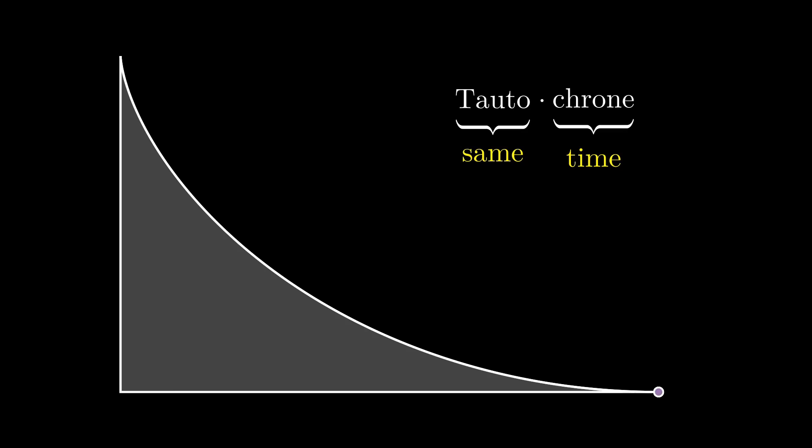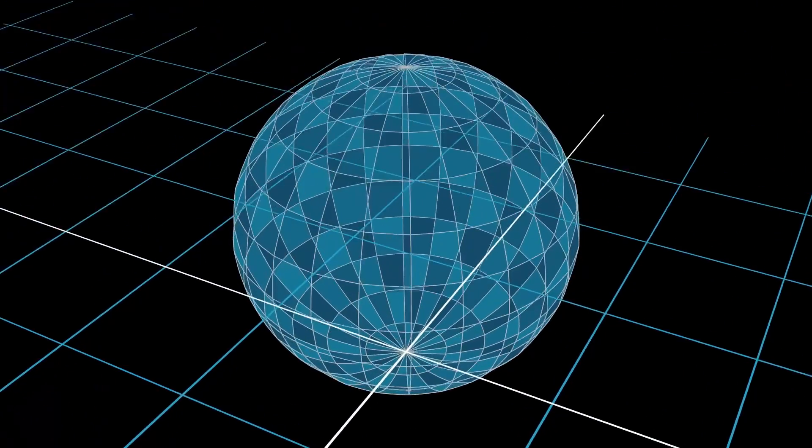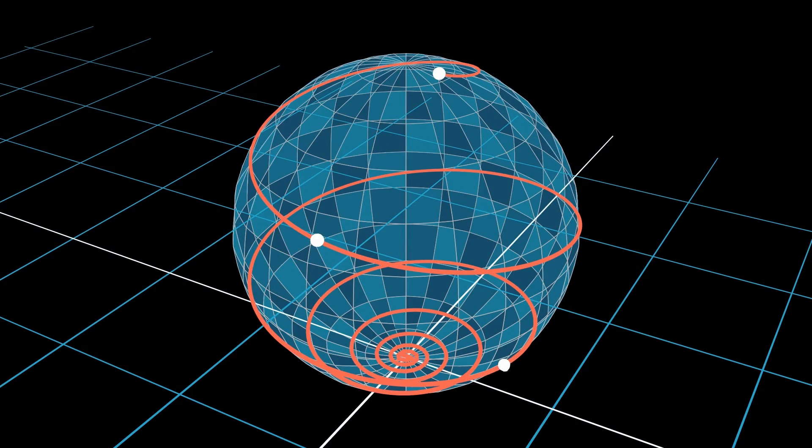But this only works on a plane surface. What about a bead sliding along the surface of a sphere? Do we have a tautochrone curve? If yes, does it have a closed form solution and how do we find such a curve?